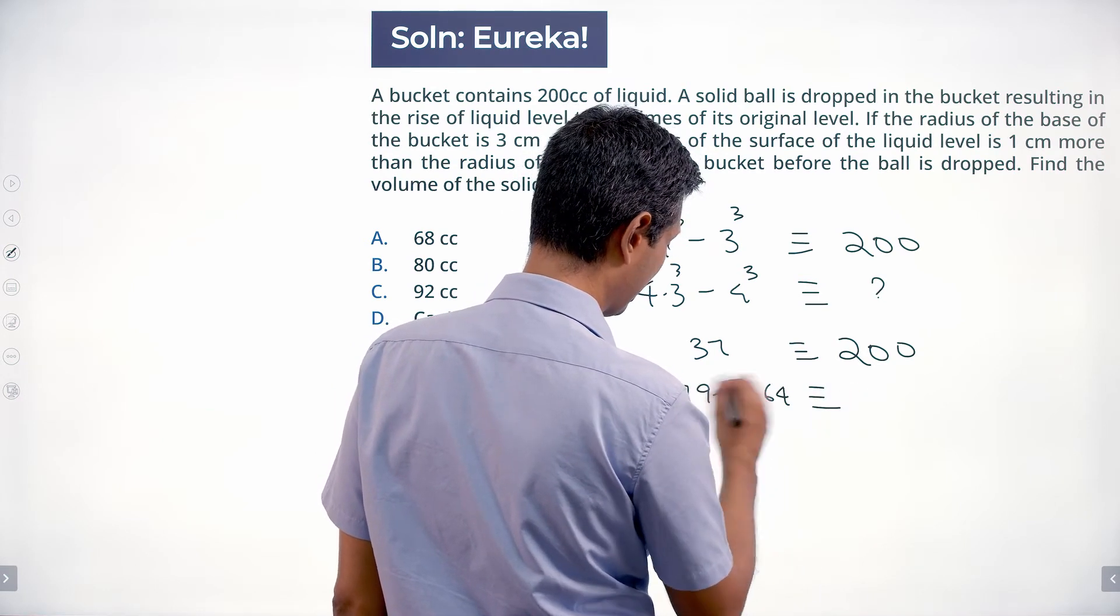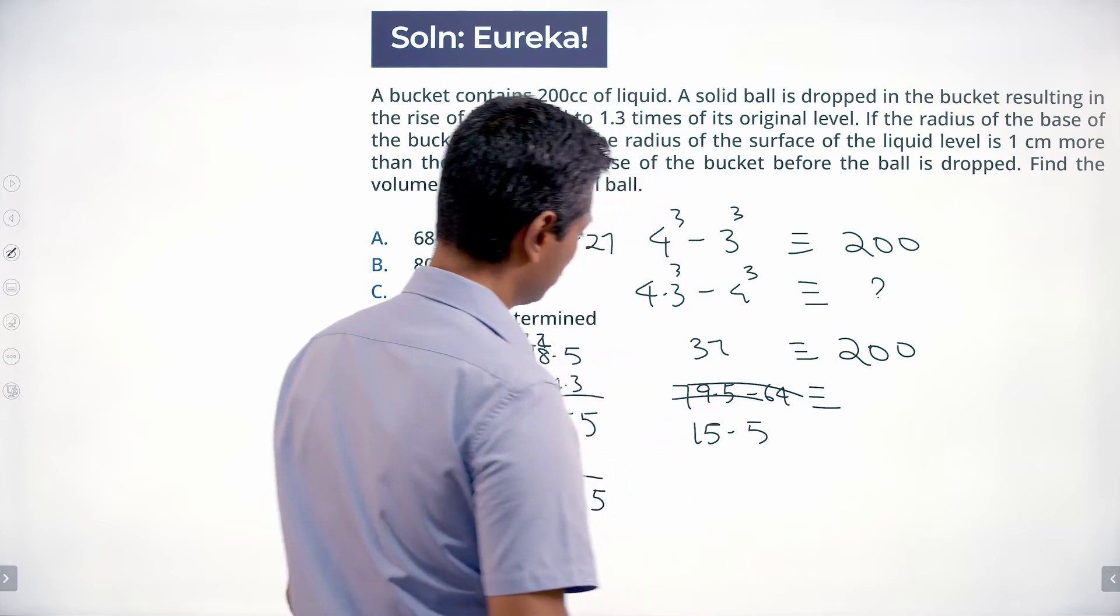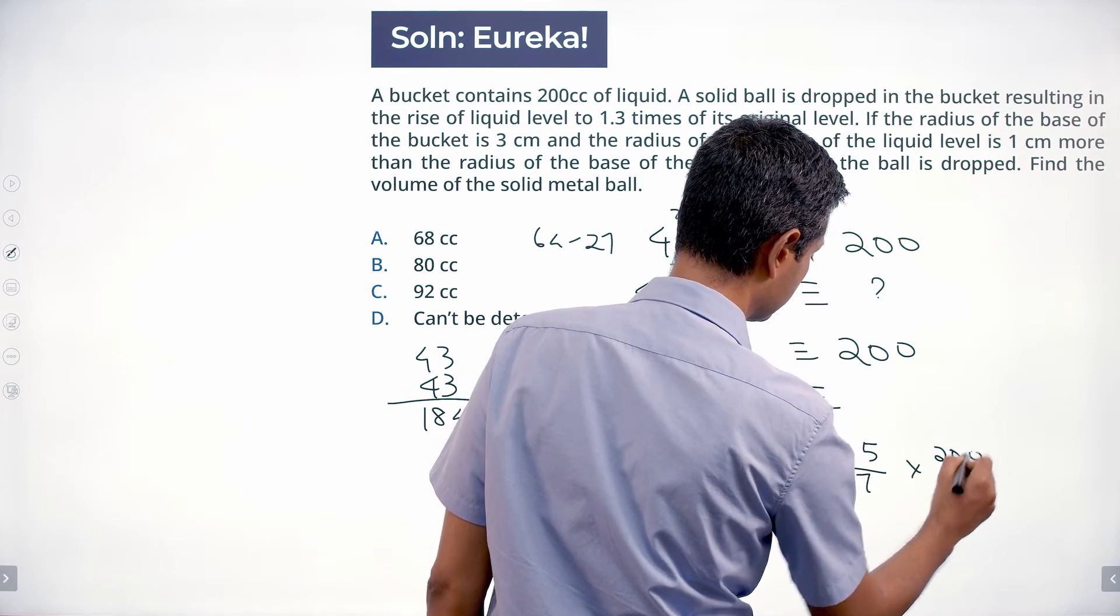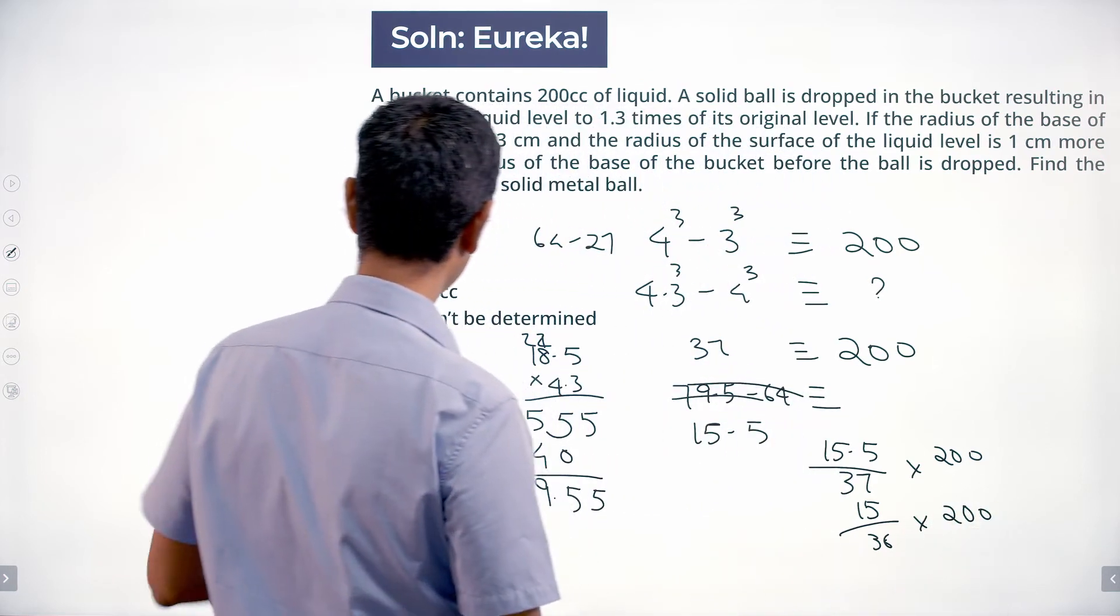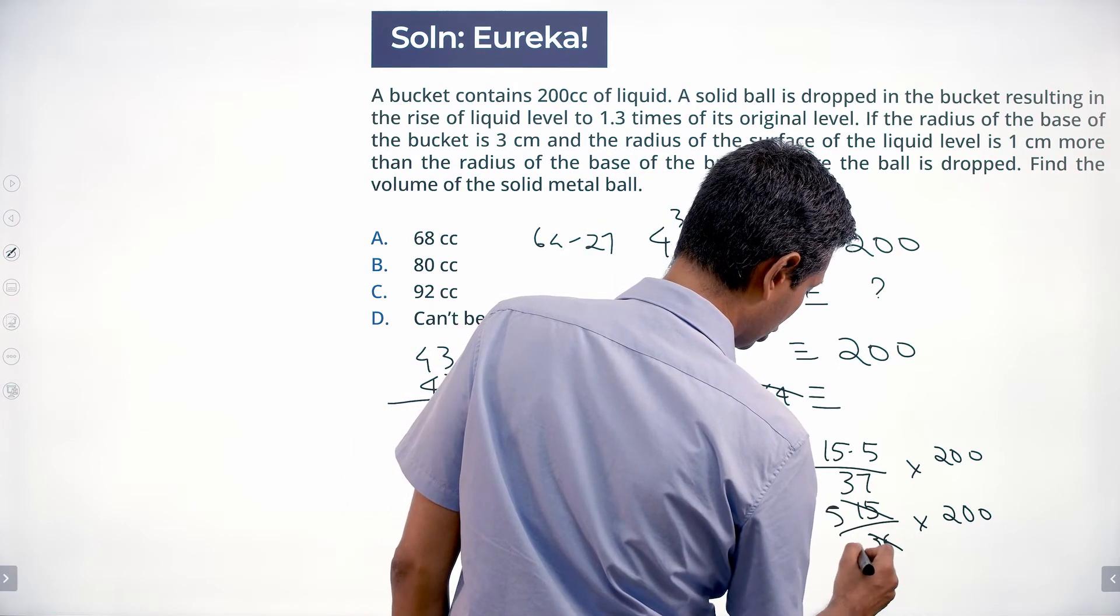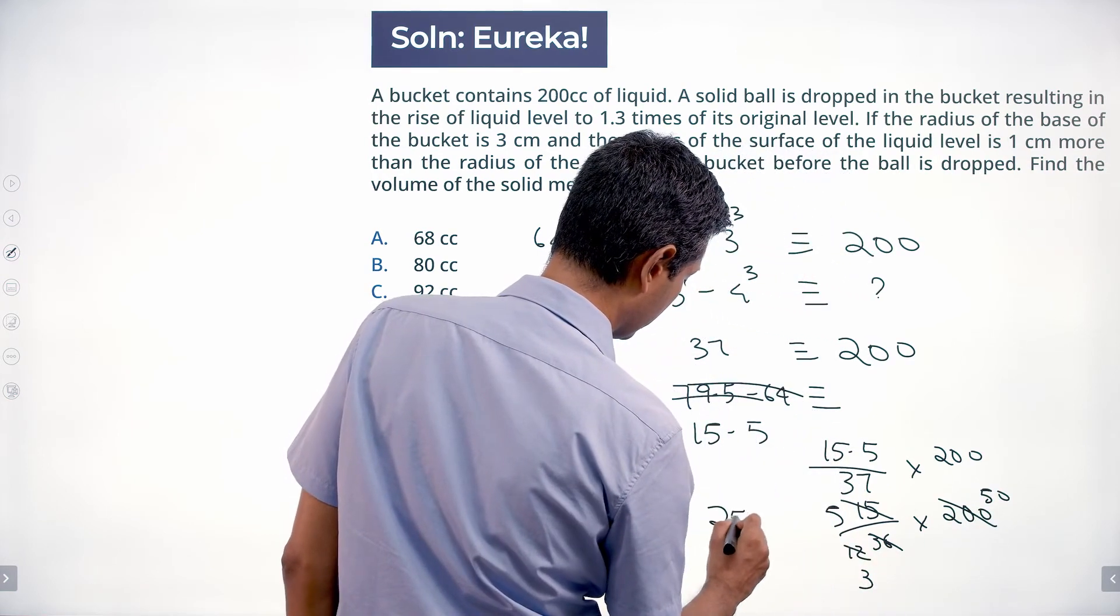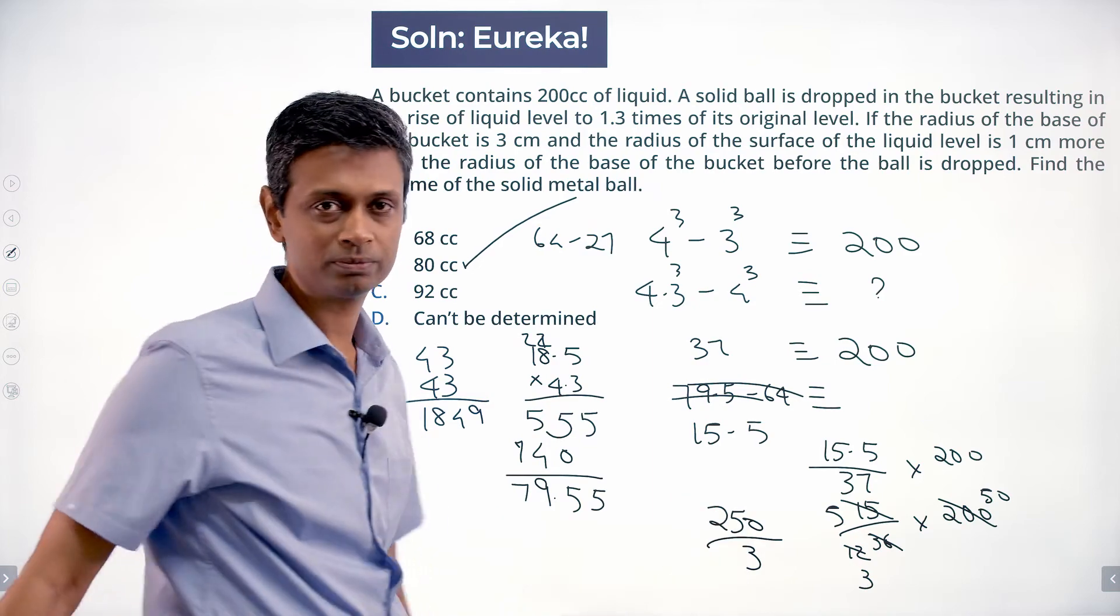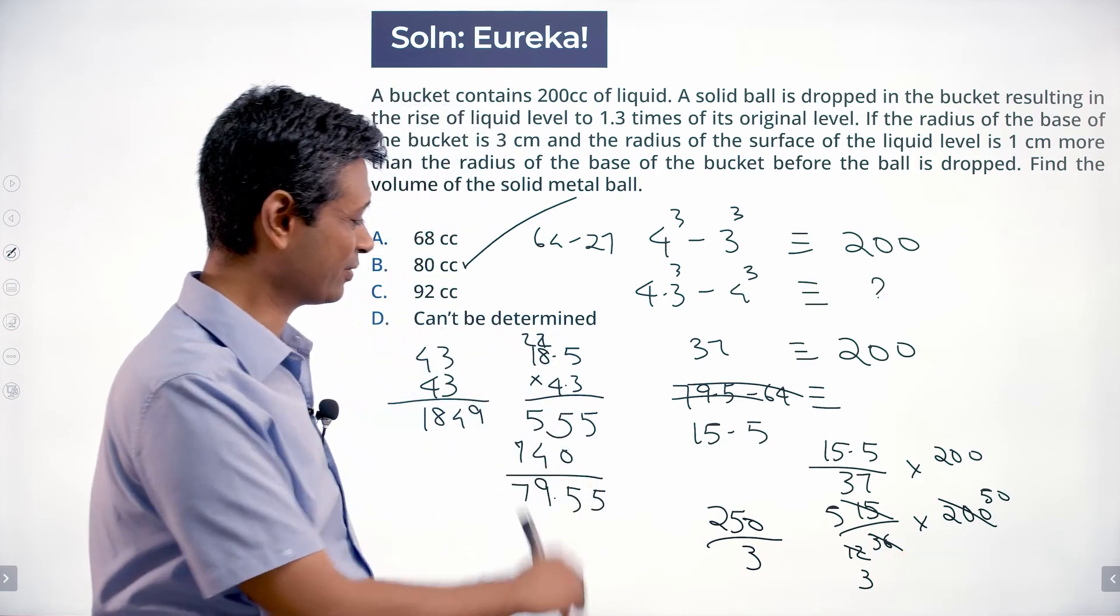What does that correspond to? 79.5 minus 64 is 15.5. What does that correspond to? So 15.5/37 × 200, or 15/36 × 200. I'm approximating along the way several times. The choices seem to be reasonably far apart. This is 5/12, which is 250/3, which is 83 point something. I've probably overestimated by a little bit. 80 centimeters. If I'm given a calculator, which I'm not, then I will use it. If I'm not, I'll make adjustments just like this.